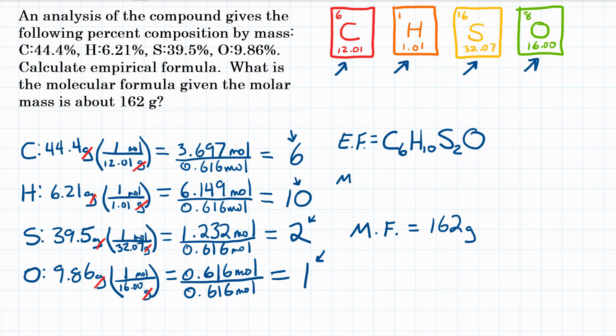So we need to figure out the molar mass of C6, H10, S2, O. So there, we're going to multiply the subscript by the molar mass. Okay, so for carbon, it's 12.01. We're going to do that for each of these and add them together.